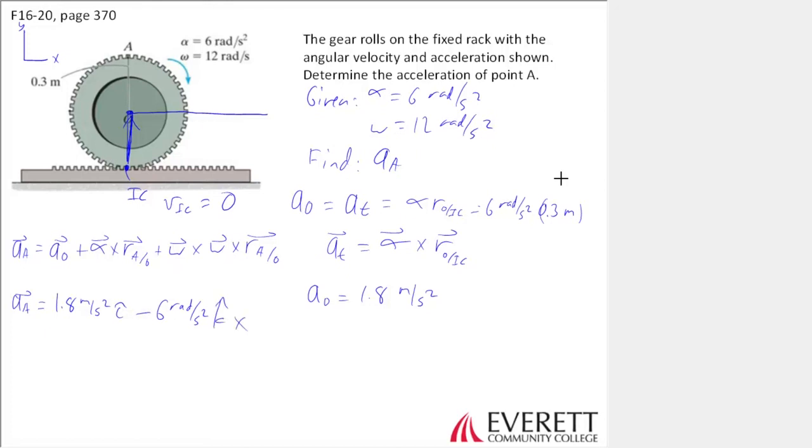And we need to cross that with the position of A with respect to O. The position of A with respect to O is if you start at O and you walk to A, that's just going to be 0.3J plus negative 12K crossed with negative 12K crossed with 0.3J.